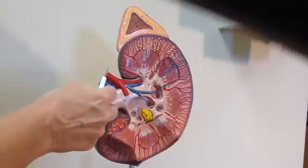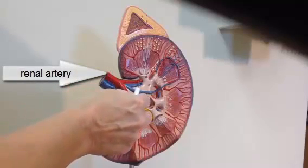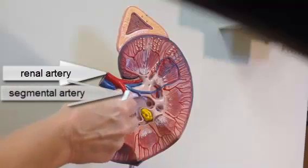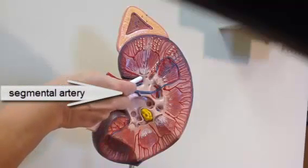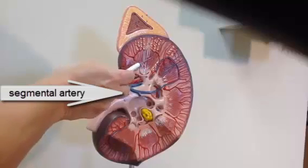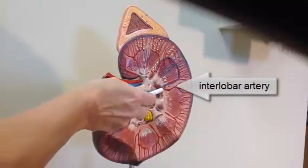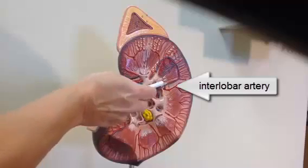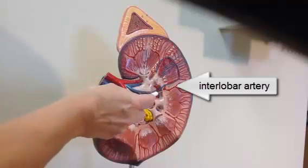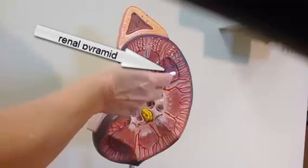Let's apply here where we're entering with the renal artery, which branches off into the segmental arteries. Then inside the renal column, between the renal pyramids, it travels as the interlobar artery, because a pyramid plus the cortical region makes a renal lobe.